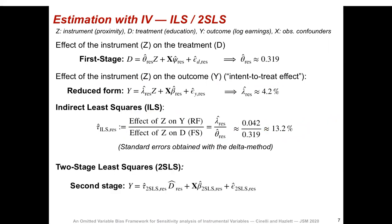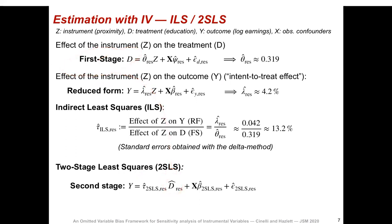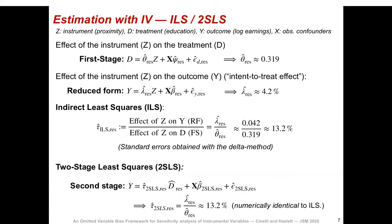A closely related approach is called two-stage least squares. We get the predictions from the first stage — call this D-hat — and regress Y on D-hat. The coefficient of D-hat is our two-stage least squares estimate. Again we obtain 13.2%, and this is not a coincidence: two-stage least squares and indirect least squares are numerically identical in this case.